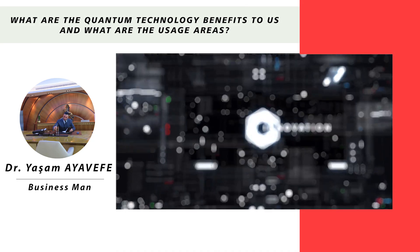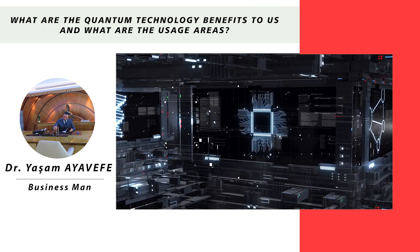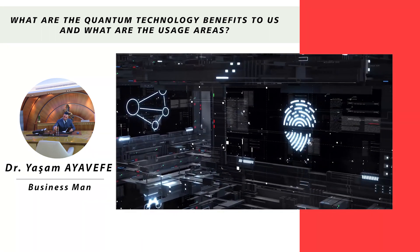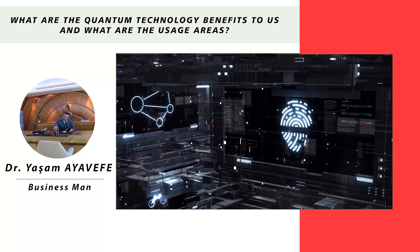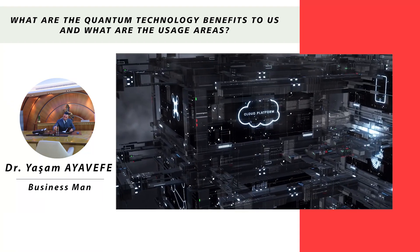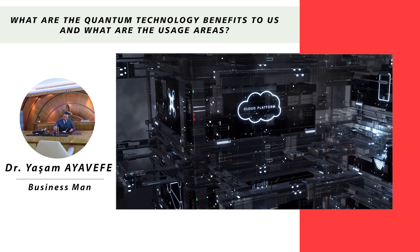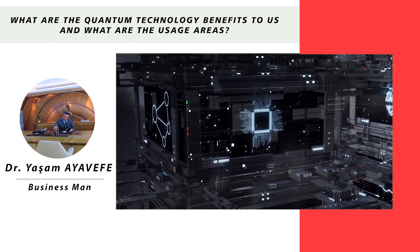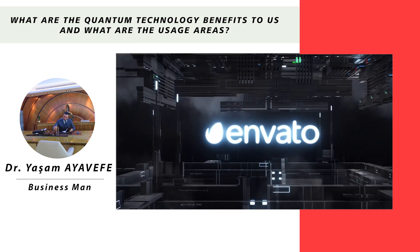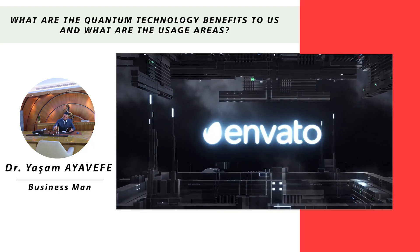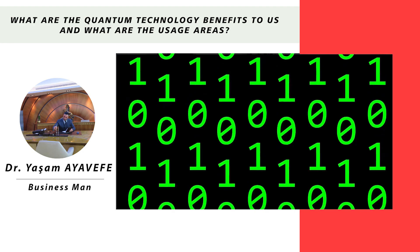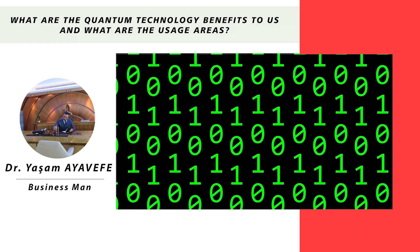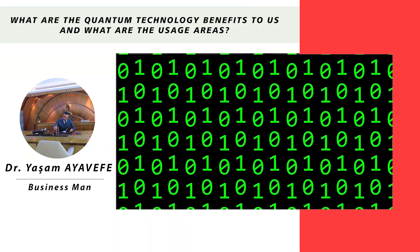We can examine quantum technology under four main headings. One: quantum computing, used to solve problems by generating new solutions faster than classical computers. Two: quantum communication, where the most secure way of communication is sought using qubits. Three: quantum sensing, aimed to maximize the sensitivity of sensors. Four: quantum simulation, which reaches the best solution in the shortest time, reducing resources lost through trial and error.